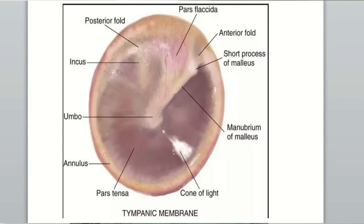Pars flaccida is also known as the attic part or Shrapnell's membrane. The pars tensa is a taut membrane but pars flaccida is flaccid — not so taut. The pars tensa is tented inwards towards the middle ear by the handle of the malleus, and from the tip of the malleus a cone of light radiates towards the anterior inferior part. This tympanic membrane is placed obliquely between the external auditory canal and the middle ear, because the posterior superior part is more lateral than the anterior inferior part.